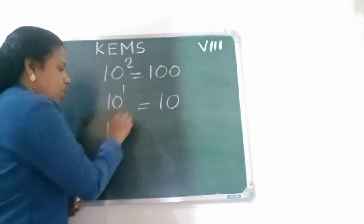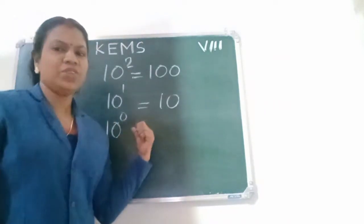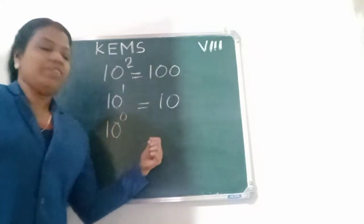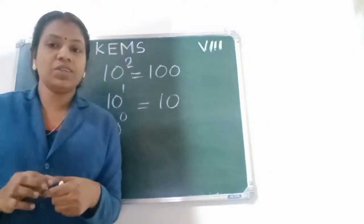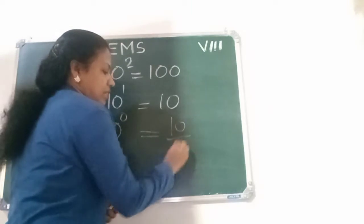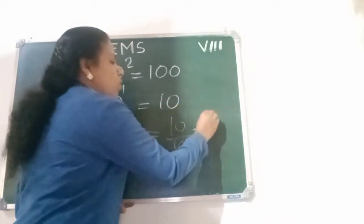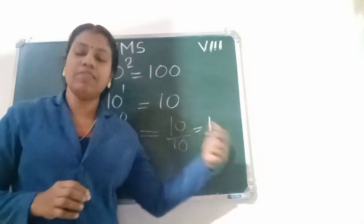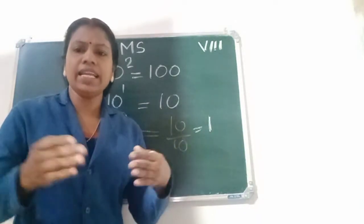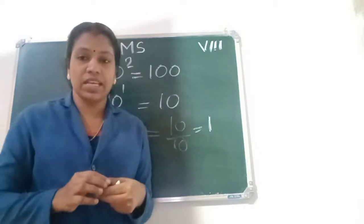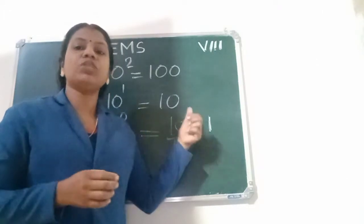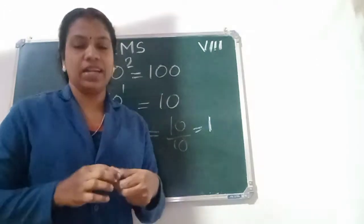What about 10 raised to 0? 10 raised to 0 equals 1 — that is 10 by 10, which equals 1. We have learned this from our earlier classes. Any number raised to the power 0 is 1 itself.